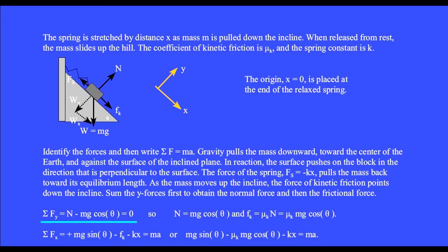The sum of the y components of forces equals the normal force n minus mg cosine theta equals zero. So in this situation, the normal force equals mg cosine theta and that makes the kinetic frictional force, which is always mu k times n, equals mu k mg cosine theta in this case.